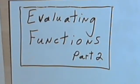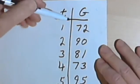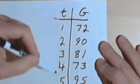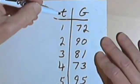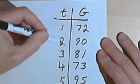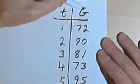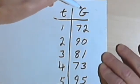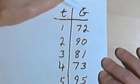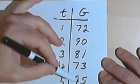So let's start with a table. Here I've got a table of values with two columns. The first column on the left, which would be the input column or the independent variable column, has 1, 2, 3, 4, and 5. And the column on the right, the output column or the dependent variable column, which is labeled G, has 72, 90, 81, 73, and 95.